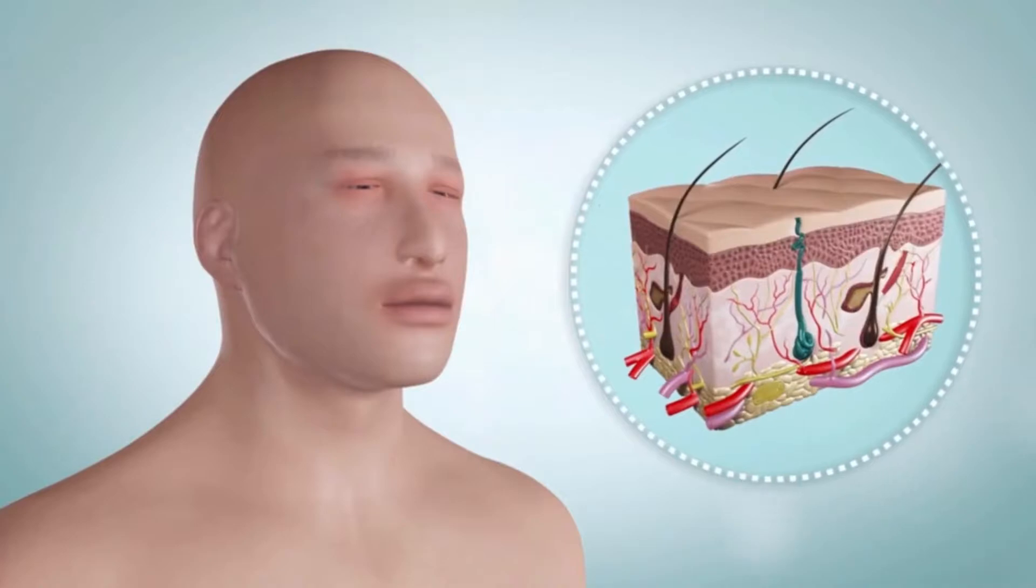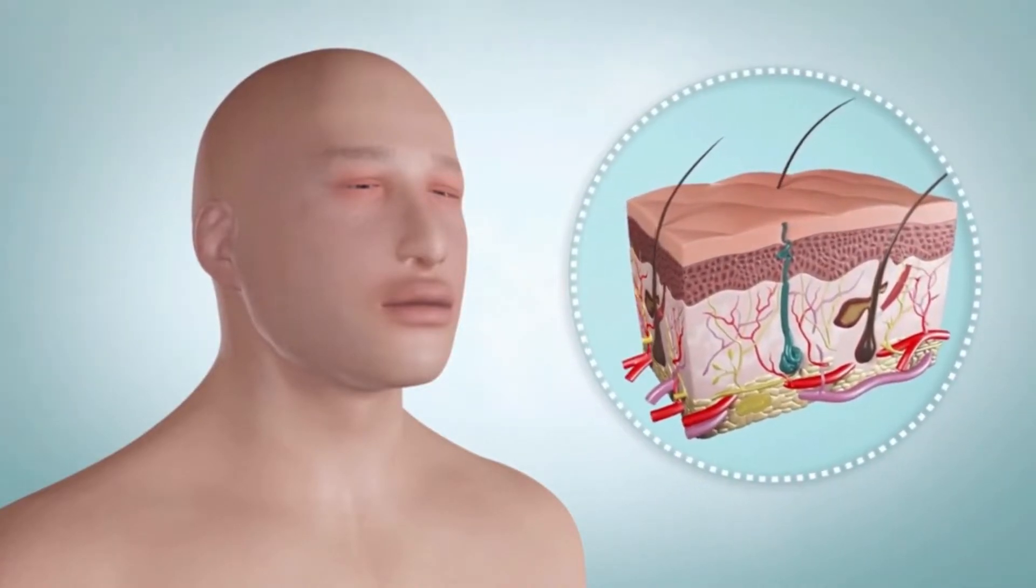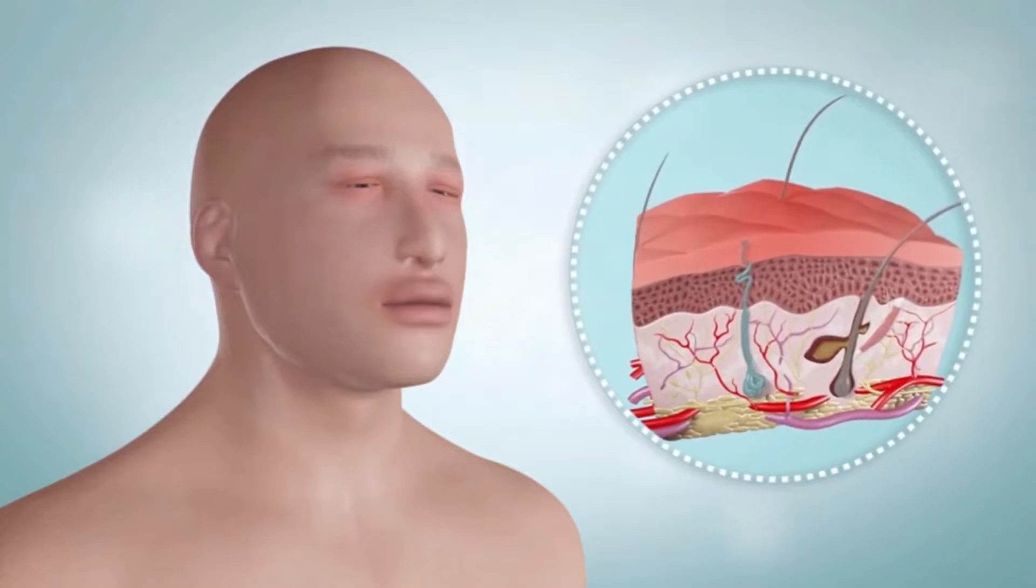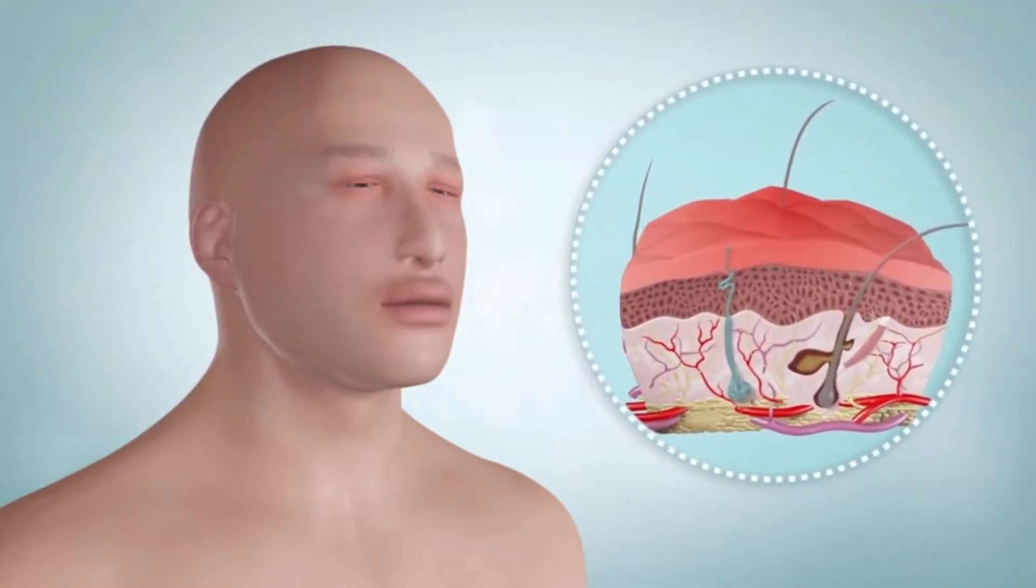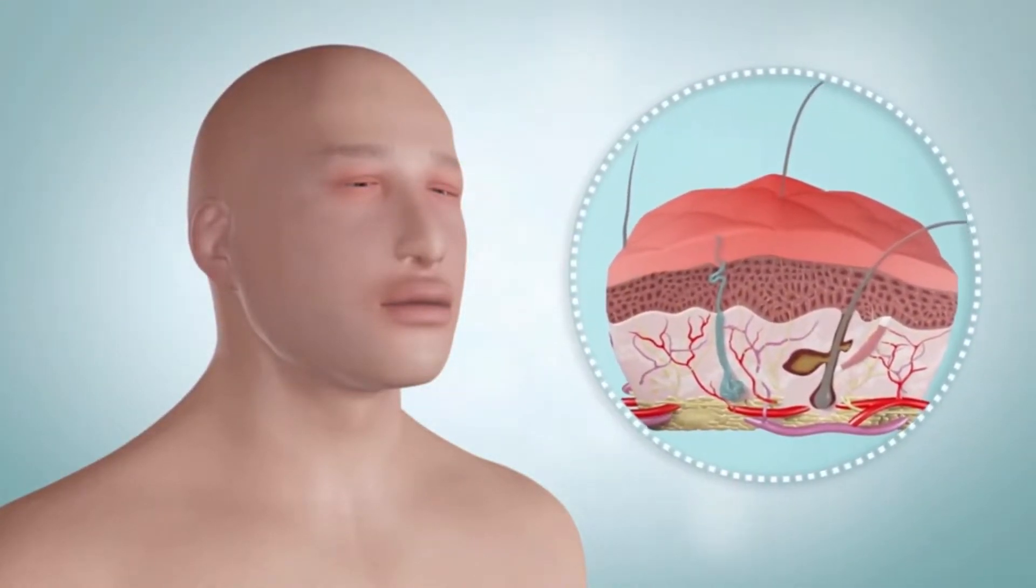Angioedema is swelling in the deep layers of your skin and mucous membranes. It's like hives, which it often occurs with, but angioedema doesn't cause your skin to itch whereas hives cause itching.